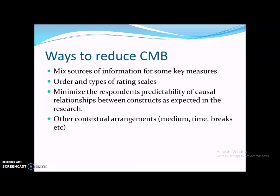If you shuffle the order of questions and the order of variables, it will reduce common method bias issues. One of the best ways to reduce CMB is to ask questions related to your dependent variables first, and then the independent variables after.